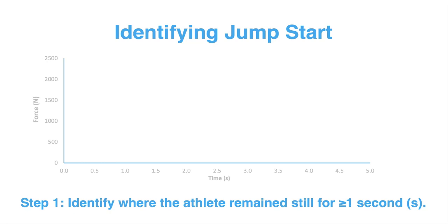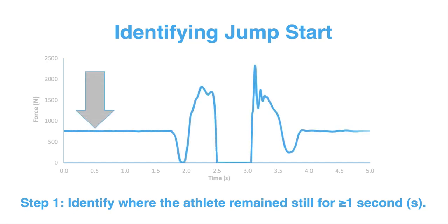I'm going to show you a five-step process for how we identify the jump start. First, we need to identify where the athlete remains still during at least the first one second where we collect the data. As you can see from that large arrow pointing down, in that initial one second of this force data collection the athlete has remained still — we know this because there's a nice horizontal line going across past that one second mark on the time axis. As soon as the athlete begins to move — just before the two second mark, around 1.7 seconds — you can see that change in force.